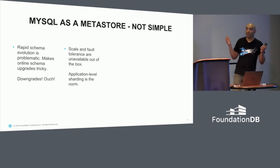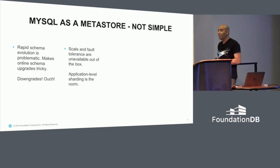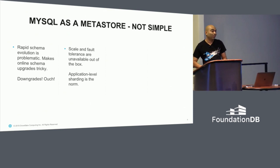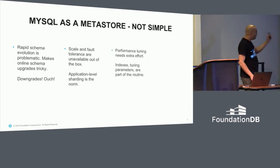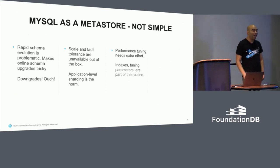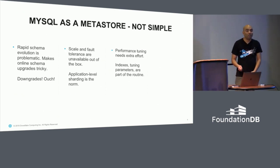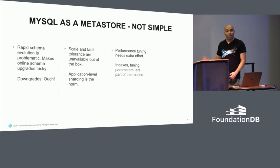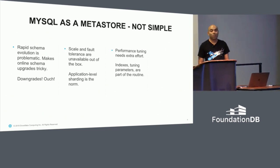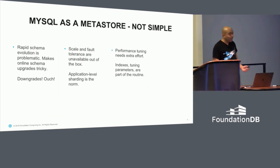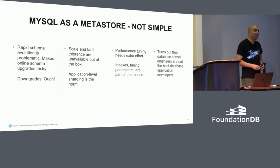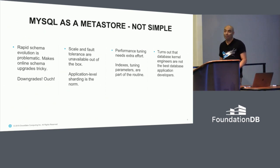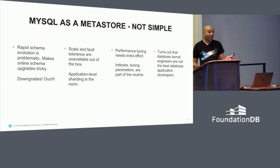You had to build application-level sharding — anyone who runs these at scale kind of knows this. The same applies to performance tuning: you have to manage indexes, tune them — somebody's full-time job, if not more than one person. And eventually it turns out that database kernel developers are not the best application developers. They really don't know how to build database applications too well.